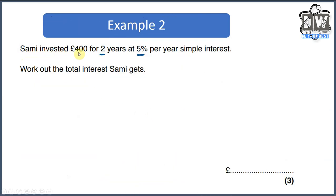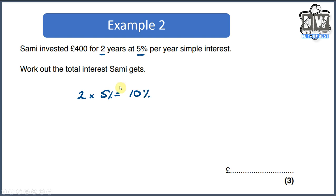Sammy invested £400 for two years at five percent per year simple interest. Work out the total interest Sammy will get. So we're not looking for how much money is in the bank account at the end of two years — we're just looking for how much money Sammy has made. Very simple: we've got five percent over two years, so two times five percent gives us ten percent over the two years.